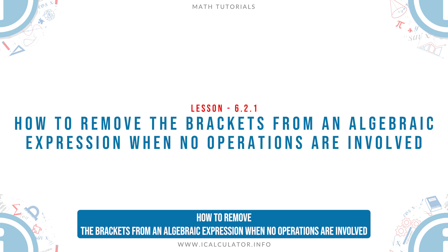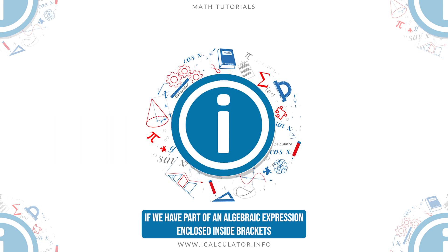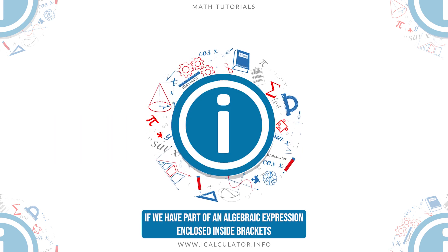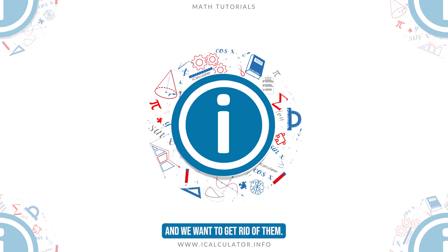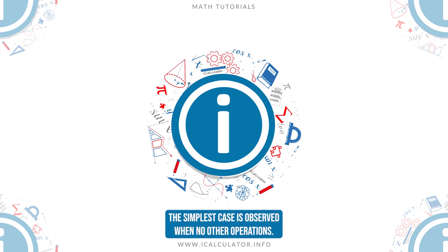How to remove the brackets from an algebraic expression when no operations are involved? If we have part of an algebraic expression enclosed inside brackets and we want to get rid of them, the simplest case is observed when no other operations,